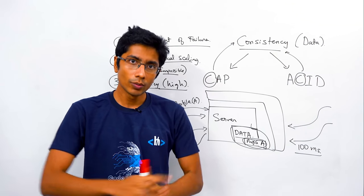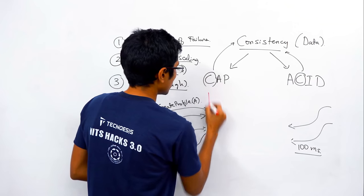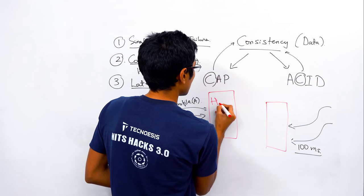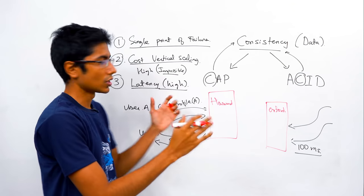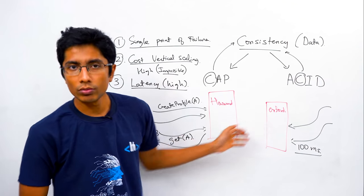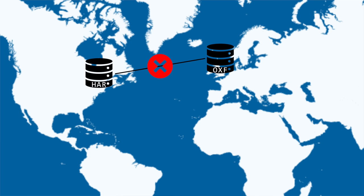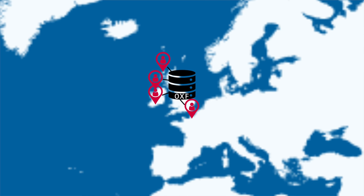We'll probably need to add more servers — and that's exactly what Facebook did. Let's have two servers: one in Harvard and one in Oxford, with no communication between them. Harvard students connect to the Harvard server and Oxford students connect to the Oxford server. They're able to see each other's data, but only limited to the campus they belong to.